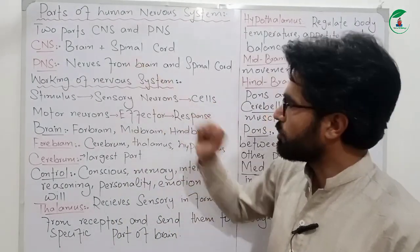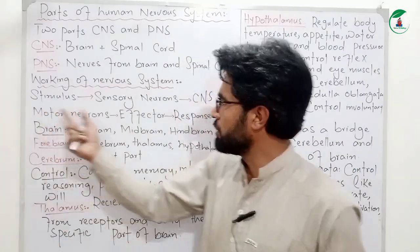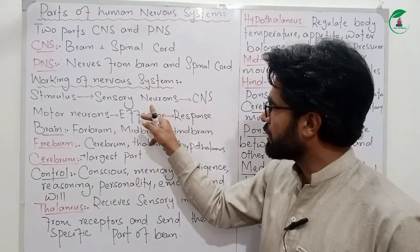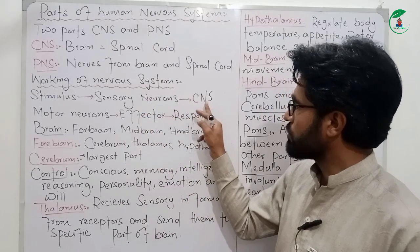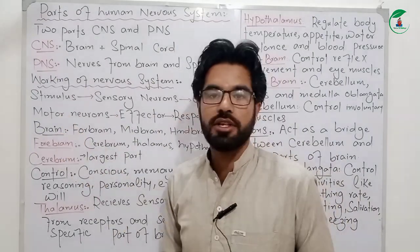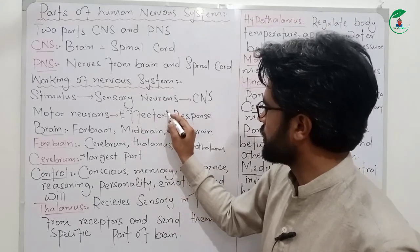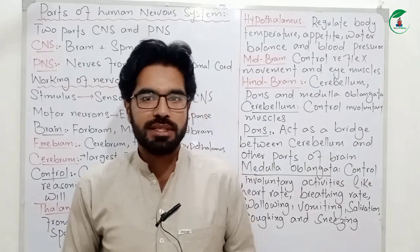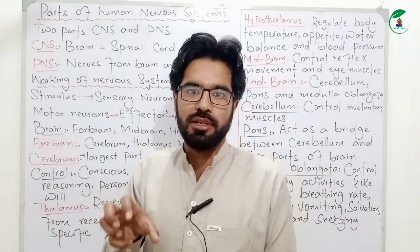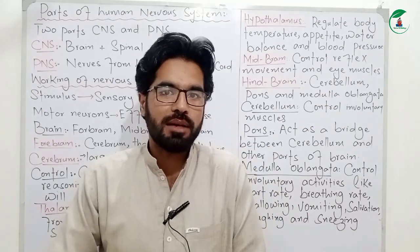The first thing is stimulus. Stimulus is received by a sensory neuron, which sends signals to the central nervous system. The motor neuron then carries signals to effectors, which are muscles and glands. Muscles produce movement and glands produce secretions.